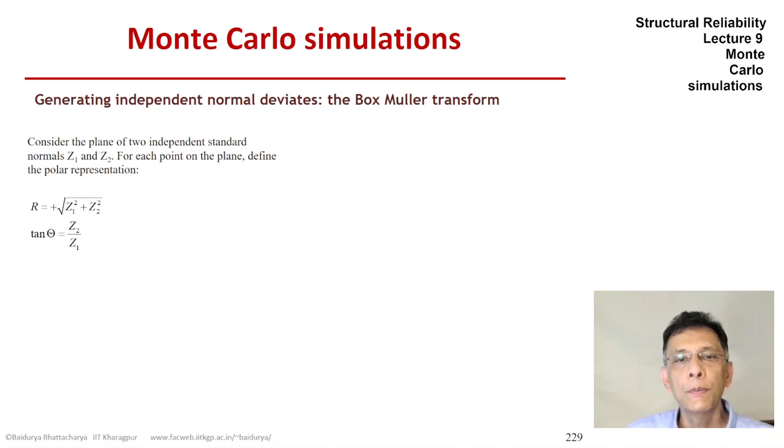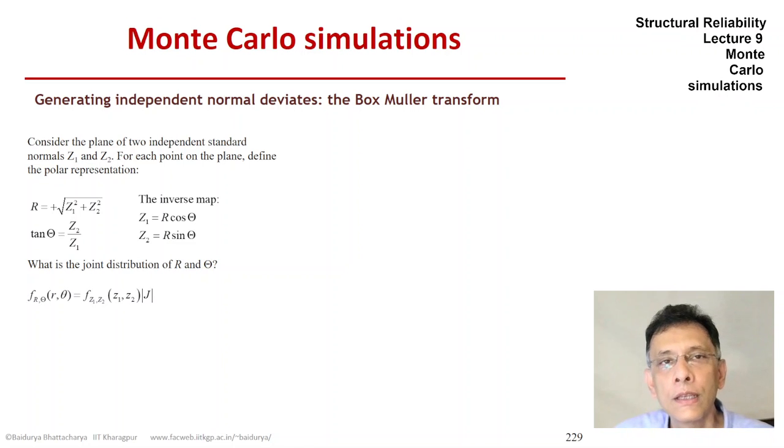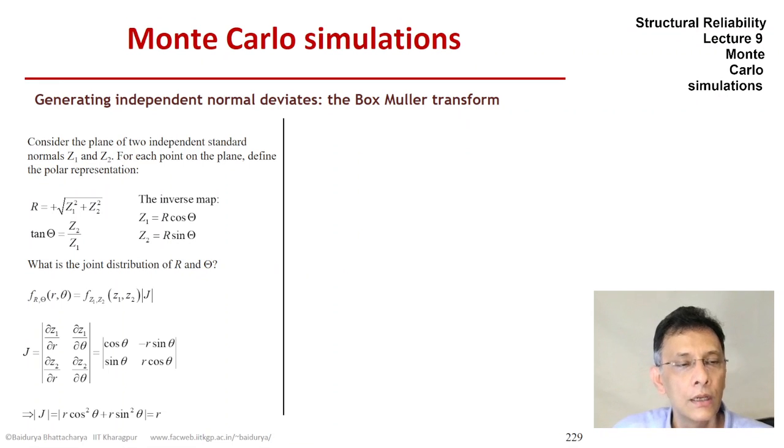So with this map and inverse map, we can actually find out the density, the joint density of r and theta. The joint density of Z1 and Z2 is the bivariate standard normal with rho equals zero. So we can express f of r theta in terms of f of Z1 and Z2 and the Jacobian. The Jacobian is simple to compute. It's equal to r, so it's the radial distance.